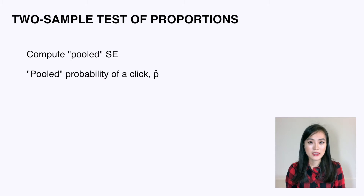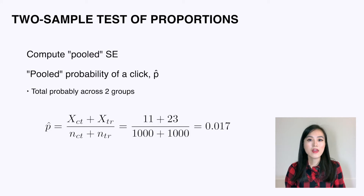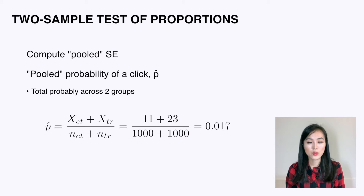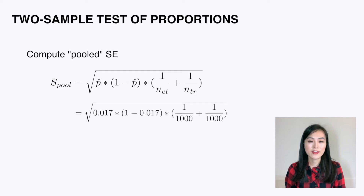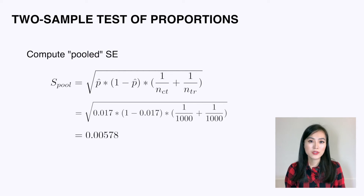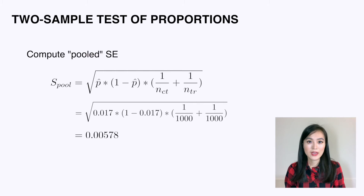To obtain the pooled standard error, the first thing we calculate is the pooled probability of a click, p-hat. This is the total probability of a click across both groups — that is, the total number of users who clicked divided by the total number of users. Then we calculate the pooled standard error using this formula. For our experiment it comes out to 0.00578. Now we can get the test statistic value, which is 2.076.